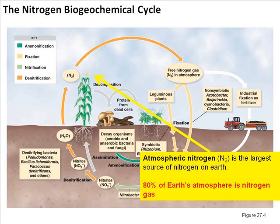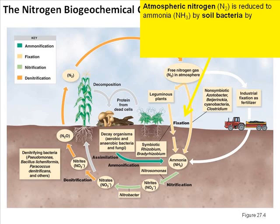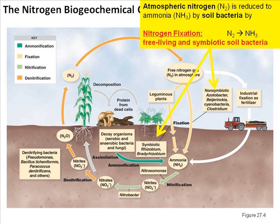We're going to start with nitrogen gas, N2 — the largest source of nitrogen on Earth, comprising 80% of the Earth's atmosphere. Microorganisms are very important in converting nitrogen gas into ammonia, or into nitrates and nitrites, which will be the usable forms for other organisms. The atmospheric nitrogen entering the soil as N2 will be reduced by key bacteria in the top layer of soil to form ammonia, NH3. This process of converting nitrogen gas into ammonia is called nitrogen fixation. It's carried out by two populations of bacteria: those free-living in the soil, and those living within the root nodules of legumes — the latter are symbiotic organisms.